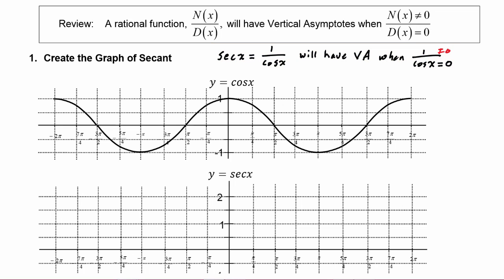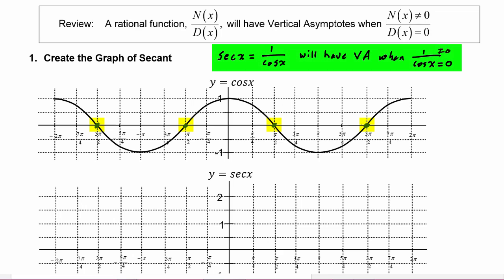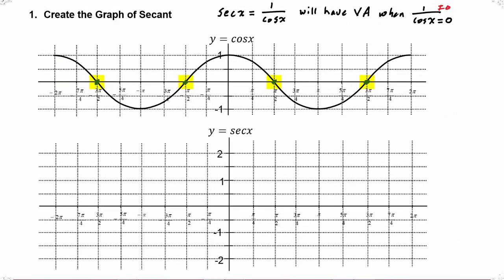When we look at the graph of cosine, we see that it has roots at negative three pi over two, negative pi over two, positive pi over two, and positive three pi over two. So those will translate into the vertical asymptotes for secant. We see then our asymptotes will be at negative three pi over two.